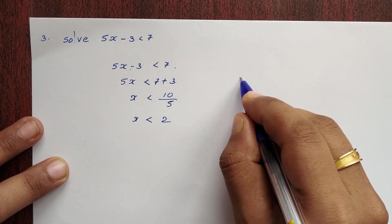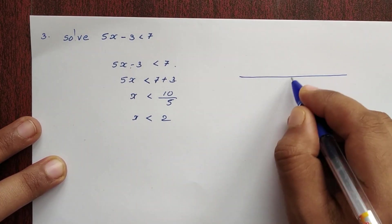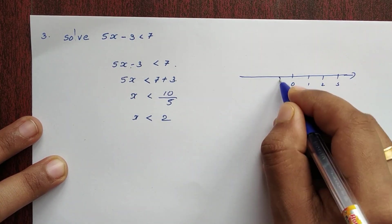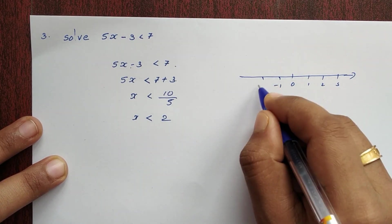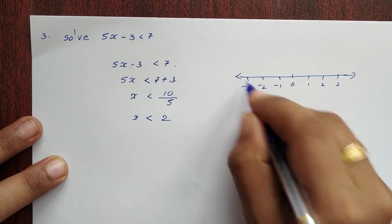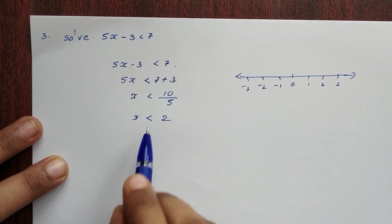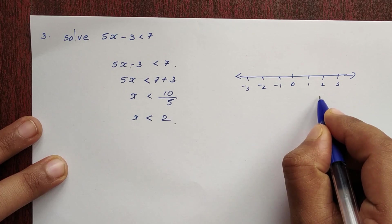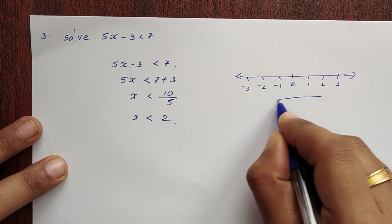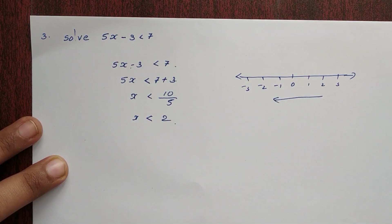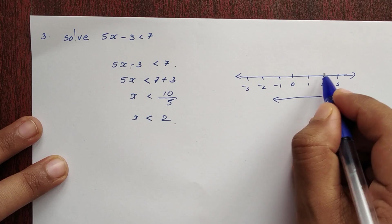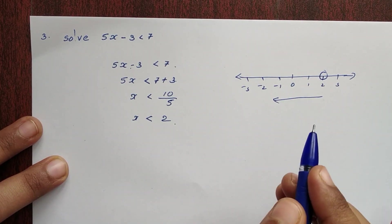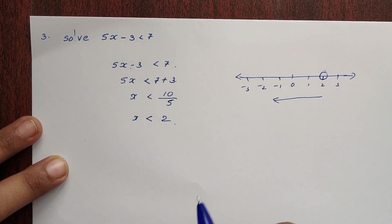So x < 2. We can show this on a number line: ..., -3, -2, -1, 0, 1, 2, 3. The solution is all values less than 2.